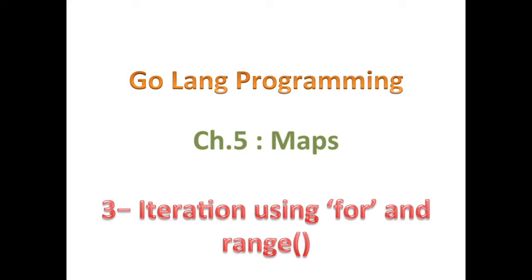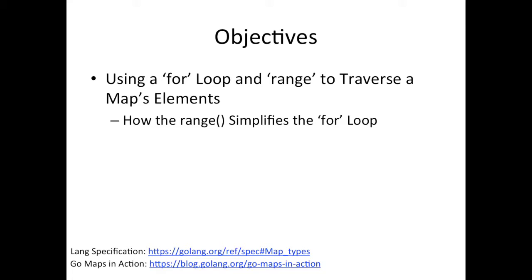As we learned, the index into a map — your key — is not always an integer, and even when it is an integer, the order doesn't really mean anything. So even if I use integers like 2, 5, and 9, even though there are three things in my map, I cannot use 0, 1, and 2 like an array. So using a for loop the way we've learned for arrays or slices goes out the window — but we still can use the for loop and the range keyword.